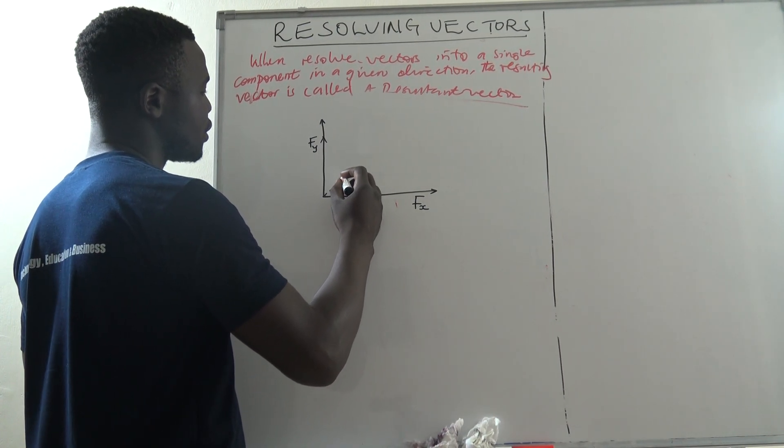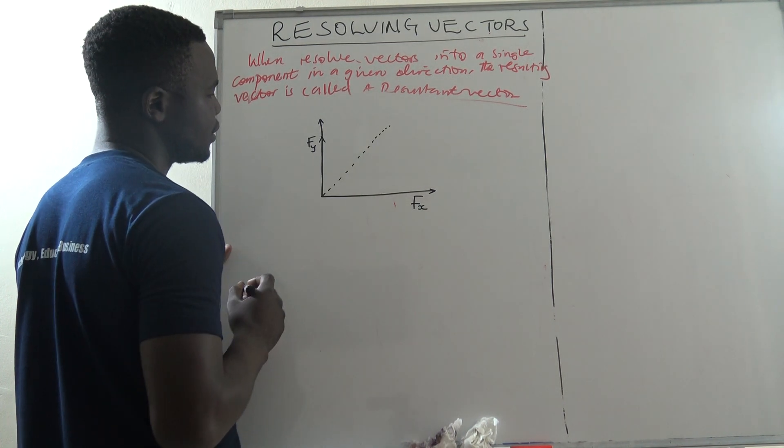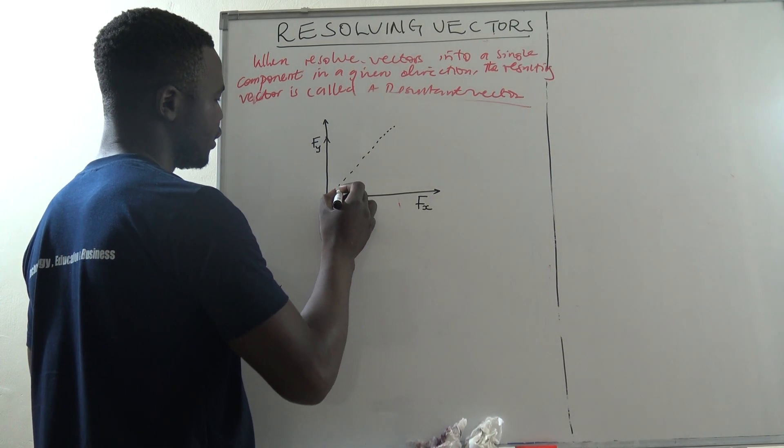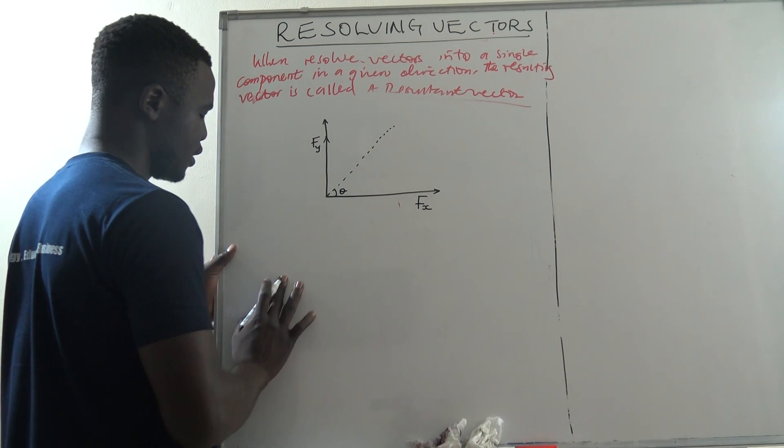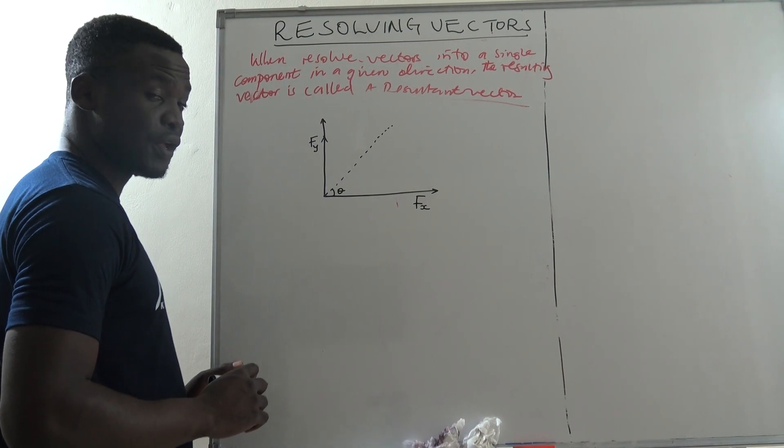the resultant force is along here. The resultant force becomes along that direction and this is assumed that the force is acting at a given angle to the horizontal.